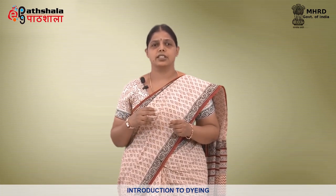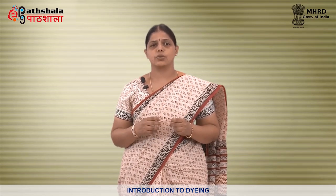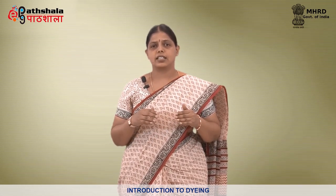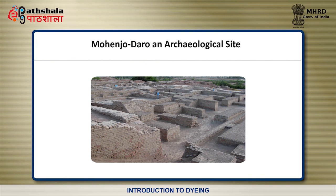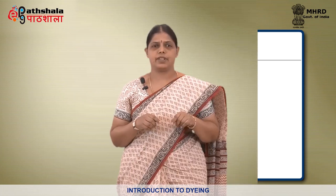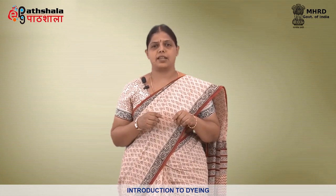There are some evidences excavated by archaeologists which reveals that textile dyeing dated back to the Neolithic period. Ochre, a red dye from iron ore, was excavated at Catalhoyek in southern Anatolia. Some of the fragments of earliest textile were kept at Museum of Anatolian Civilizations, Ankara, Turkey. It is understood that the natural dyes were used by Chinese 5000 years ago. Cotton fabrics dyed with madder were found in Mohanjodaro, an archaeological site which is now in Pakistan. In Sanskrit, this plant name is Manjista.